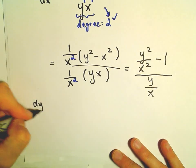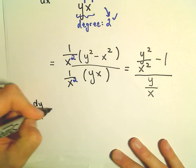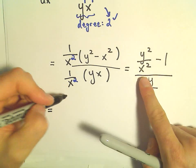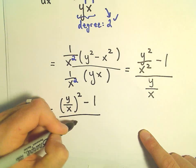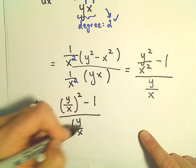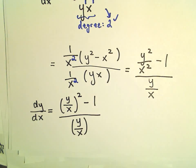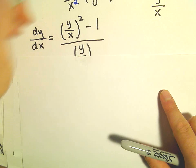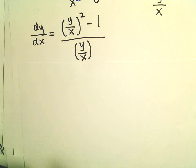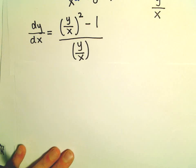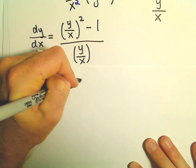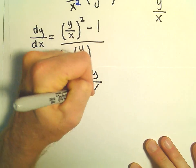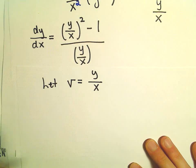So what we've done is just changed the appearance a little bit. We can rewrite dy over dx as the quantity y over x, squared, minus 1, all divided by y over x. That's step 1 — dividing by x to the degree. Now we're going to do our change of variables. We're going to let v equal y over x, and replace all the y over x terms with v's.